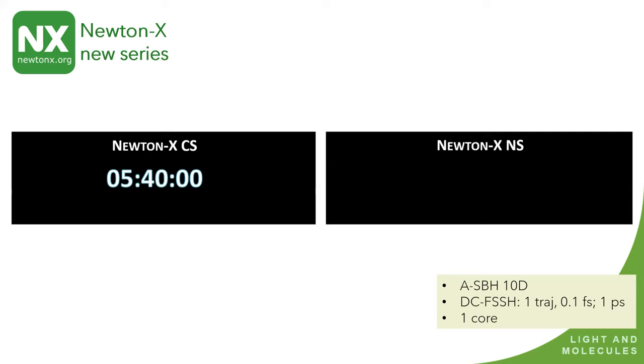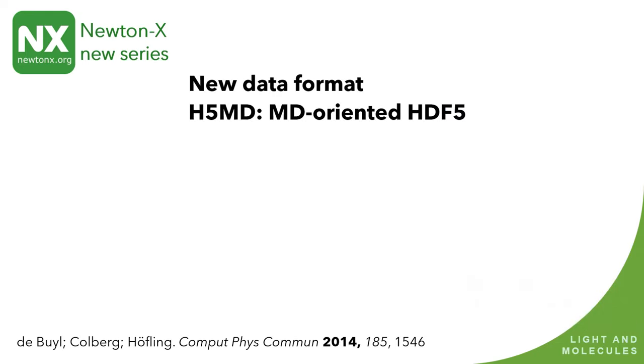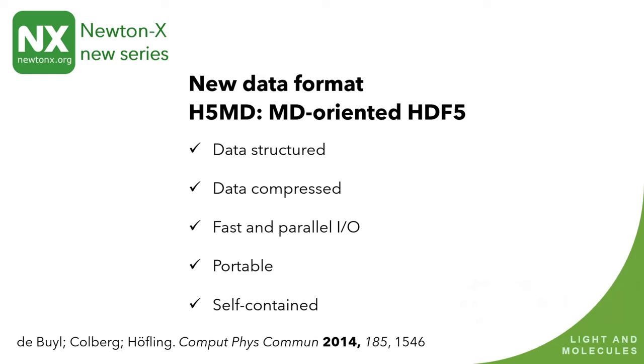And the Newton-X CS was quite inspired by Columbus. It was a mix, a match of Perl and Fortran. And now Newton-X NS is pure Fortran, which means that it's much, much, much faster. For instance, if you do the simulation for this, that takes five hours with Newton-X CS, in Newton-X NS, it drops to 11 minutes. So it's 2,000 times difference in integration time.